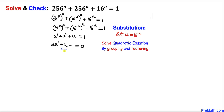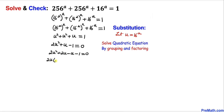We rewrite the middle term u as 2u - u. Then 2u is common in the first two terms, and -1 is common in the last two terms. Factoring out 2u gives (u + 1), and factoring out -1 gives (u + 1). So we get (2u - 1)(u + 1) = 0.